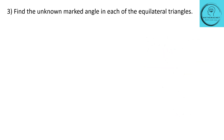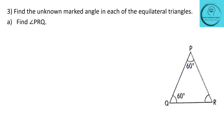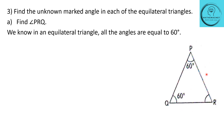The next question: find the unknown marked angle in each of the equilateral triangles. Find angle PRQ. The given triangle is equilateral. We already know that in an equilateral triangle all angles equal 60 degrees. So angle PQR equals angle QPR equals angle PRQ, which is 60 degrees. The unknown angle PRQ is equal to 60 degrees.